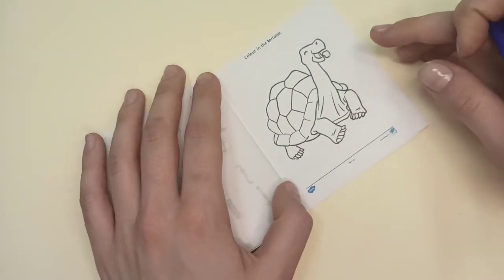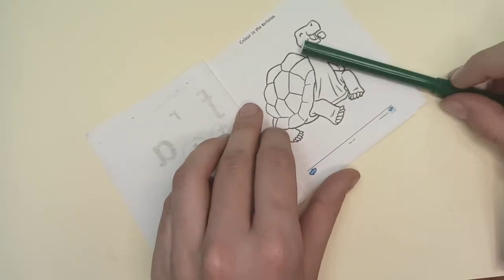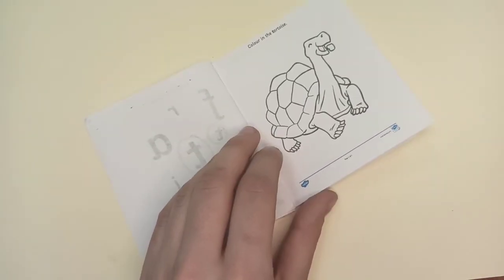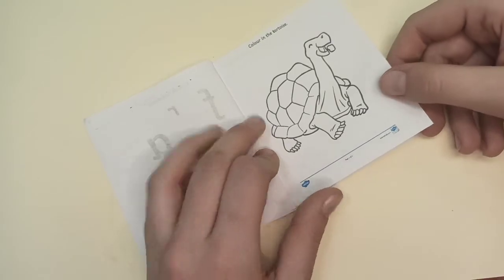Color the tortoise. They are usually green, so you can color it green. On the land, not in the sea, turtles live green.